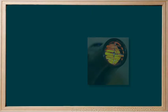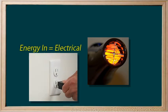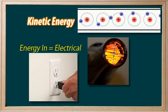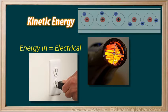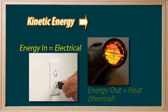A blow dryer converts electrical energy, which is kinetic energy. Remember that current electricity is the movement of electrons, so it's kinetic energy — movement. And a blow dryer converts this kinetic energy into heat, or thermal energy.